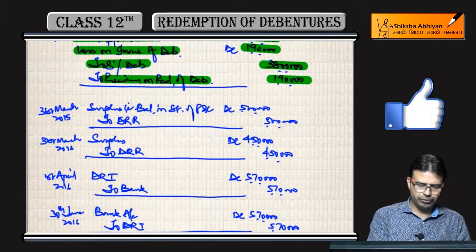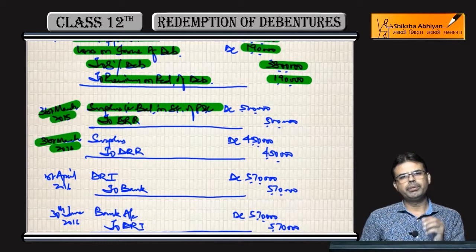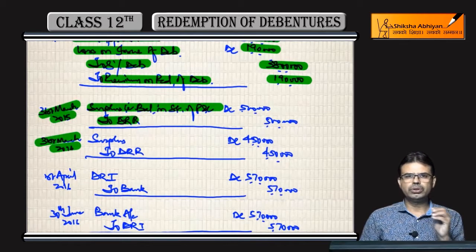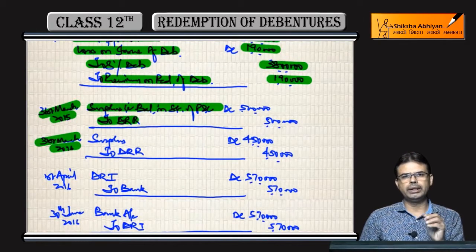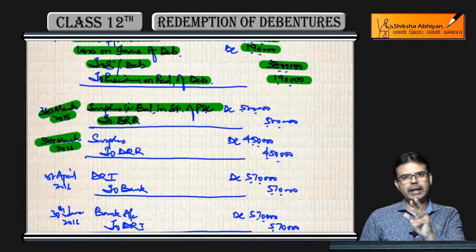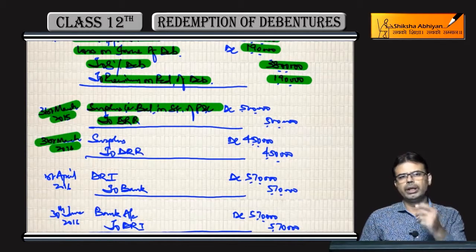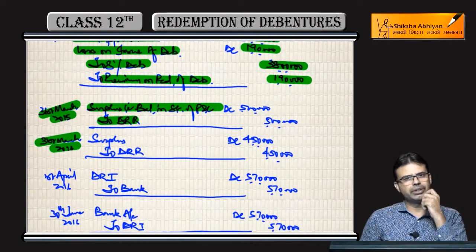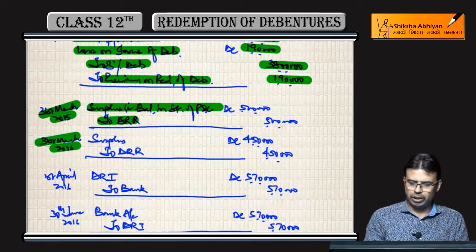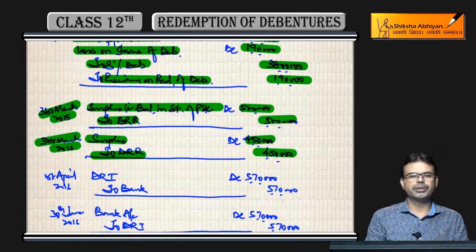Now on 31st March 2015 and 31st March 2016, create DRR. Note: in the exam, write the full name — Surplus, that is, Balance in Statement of Profit and Loss, debit to DRR. We write 'surplus' here just to save time. First year: ₹5 lakh transferred. Second year: ₹4,50,000 transferred.